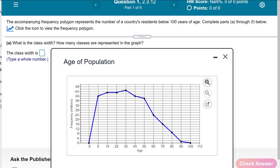What is the class width? How many classes are represented in the graph? The class width is the difference between the second dot and the next one, or the third and the fourth. You can see the difference between 5 and 15 is 10, so that should be the class width.